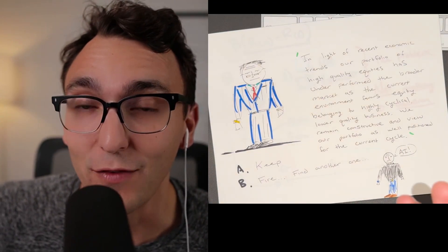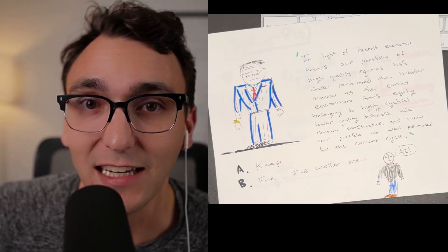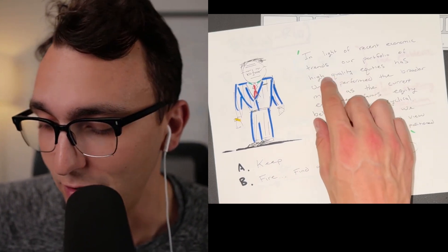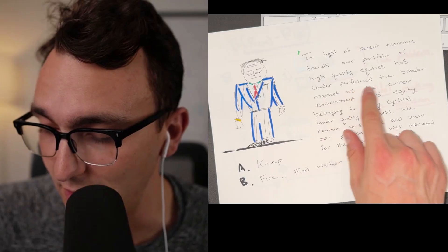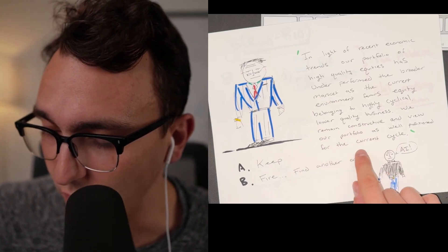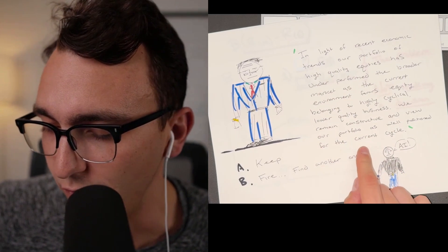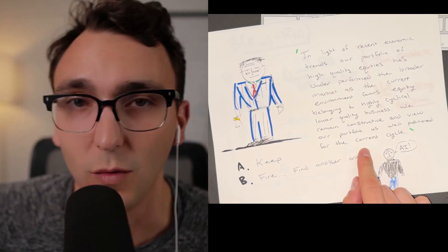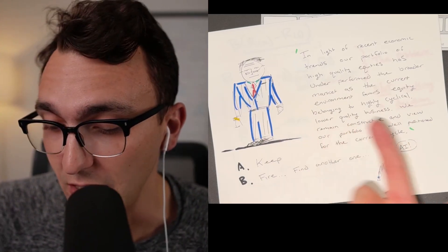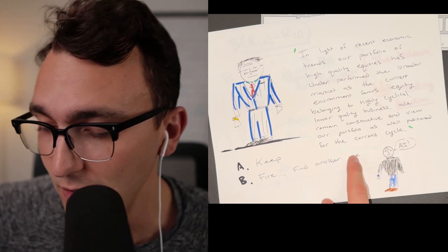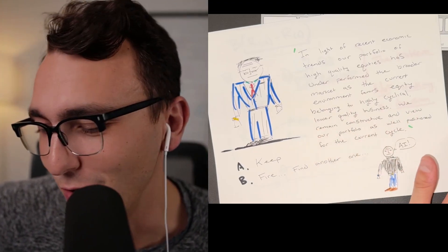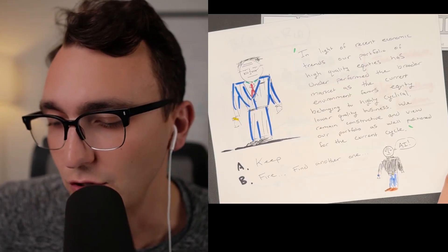So one way you might determine if you're taking beta or alpha risk is if you're in actively managed or passively managed funds. If you're in actively managed funds, you'll frequently hear something like this. In light of current recent economic trends, our portfolio of high quality equities has underperformed. The broader market as the current environment favors equity belonging to highly cyclical lower quality businesses. We remain constructive and view our portfolio as well positioned for the current cycle. All that means is just Wall Street banker talk for we underperformed our benchmark, but we think our portfolio will do well going forward. And you'll hear that quite often. And that leaves you with a decision point. Do I believe in this manager? Do I want to stick with them? And do I think they can deliver alpha in the future? Or do I find someone else, maybe another actively managed person, they're likely to just say AI at this point, if you're in this boat, or you can just go in a passively managed direction and just try and own the market.